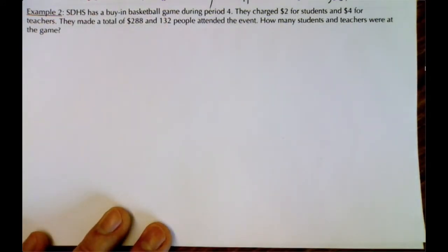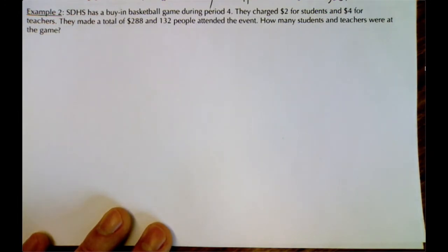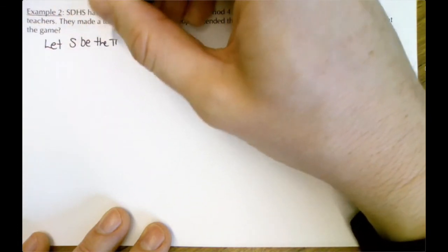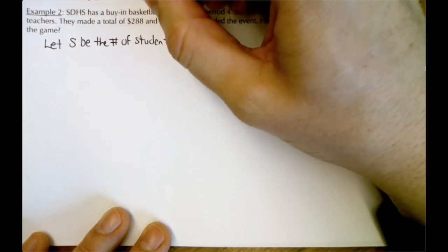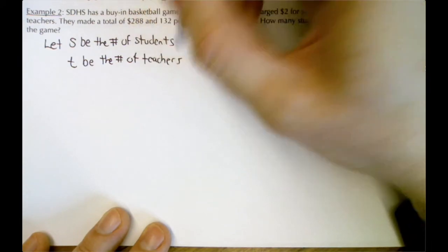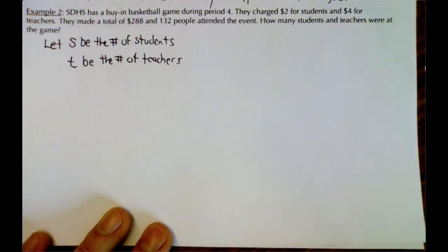In example two, SDHS has a buy-in basketball game during period four. They charge $2 for students and $4 for teachers. They made a total of $288 and 132 people attended. How many students and teachers were at the game? The unknowns are the number of students and teachers, so let S be the number of students and T be the number of teachers. Note: be careful with S — make sure it doesn't look like a 5.